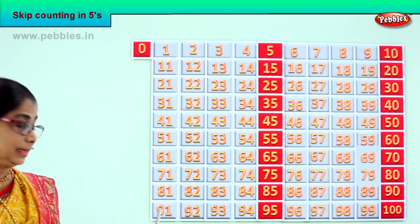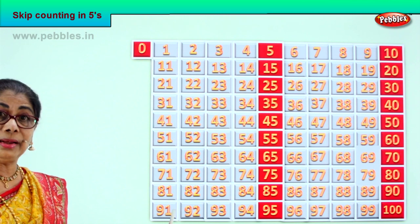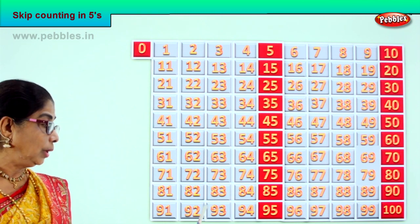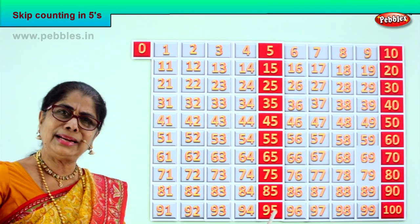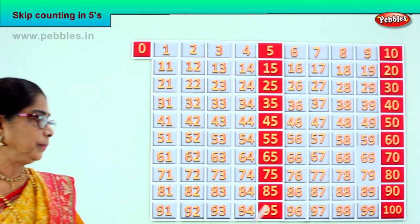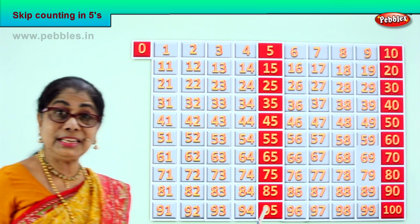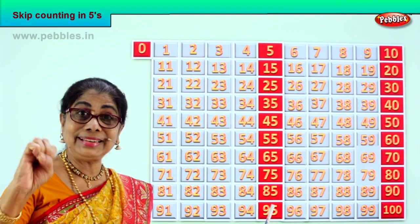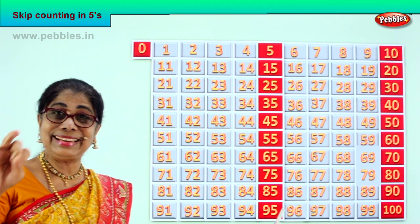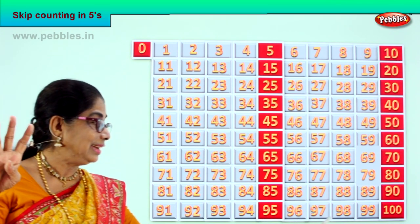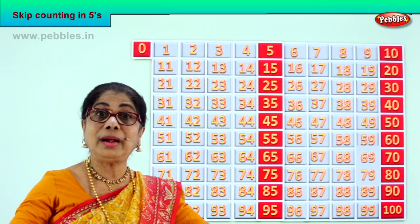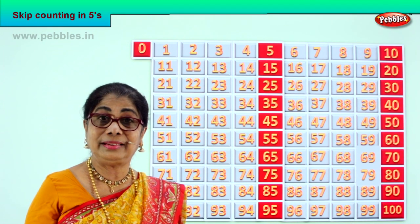After ninety: ninety-one, ninety-two, ninety-three, ninety-four, ninety-five. After ninety-five: ninety-six, ninety-seven, ninety-eight, ninety-nine, one hundred.